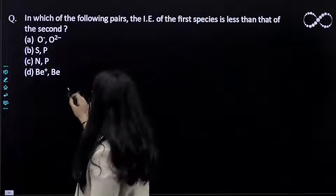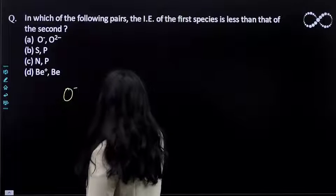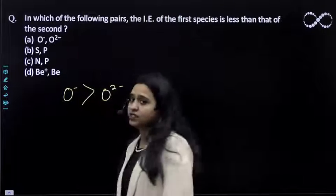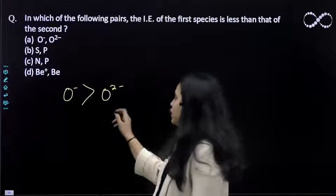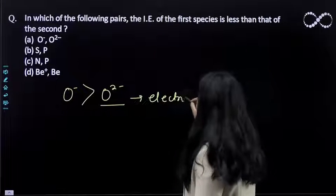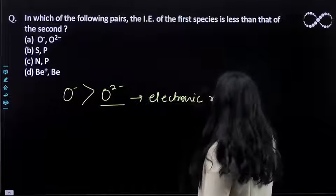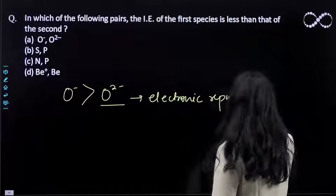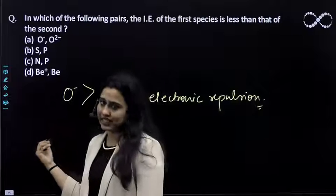So, if we talk about O⁻ and O²⁻, O⁻ will have higher ionization energy than O²⁻ because of the two negative charges. It will have more electronic repulsions. So, because of more electronic repulsion, an electron can be removed easily from O²⁻ in comparison to O⁻.